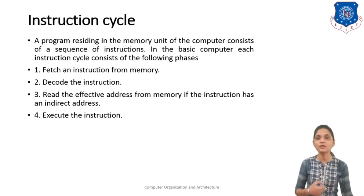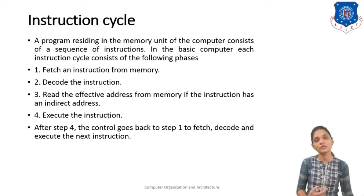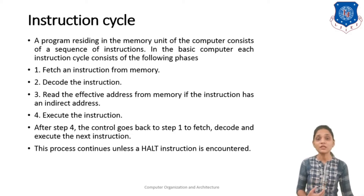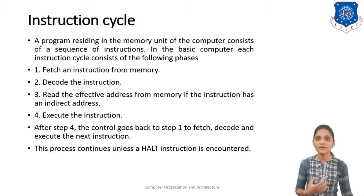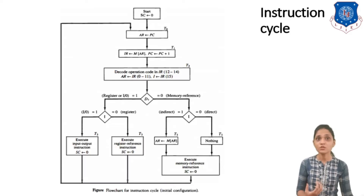So all instructions consist of these 4 tasks: fetch, decode, read effective address, then execute. After the 4th step, control goes back to step 1 to fetch, decode and execute the next instruction. This process continues until the whole program has been executed. This is the instruction cycle.